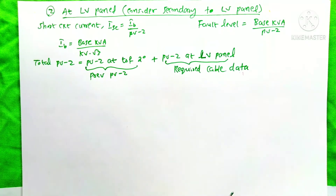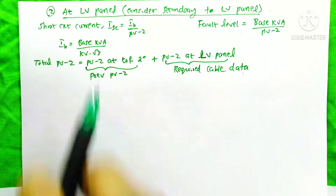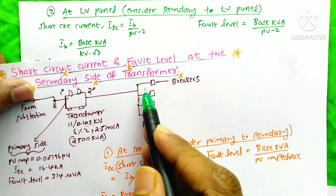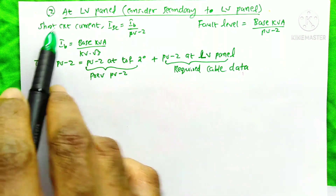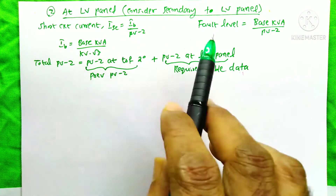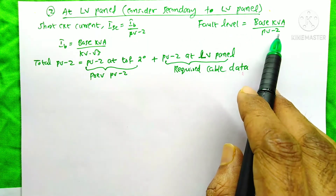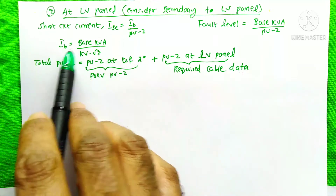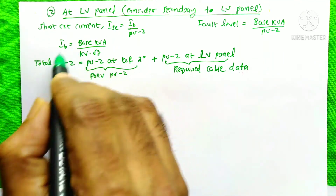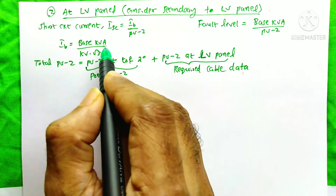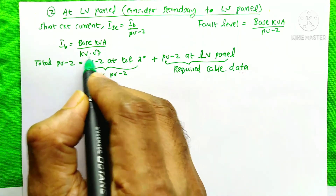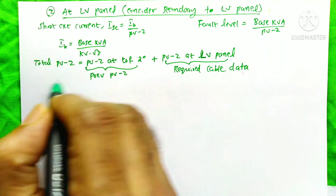Now we are going to calculate the short circuit current and fault level at the LV panel. The equations are: ISC equals IB divided by per unit impedance, fault level equals base kVA divided by per unit impedance, and IB equals base kVA divided by kV into root 3. The IB has no change because the base kVA is the same — 2.5 MVA — and kV is still 0.415. So we need to find the per unit impedance.